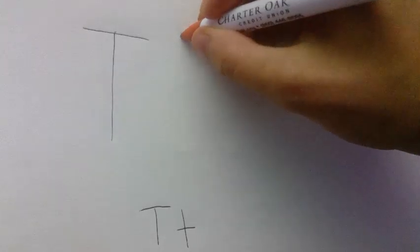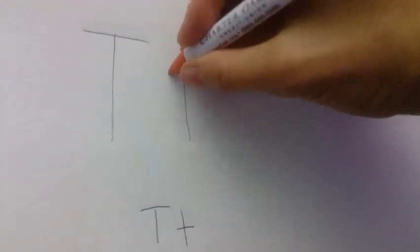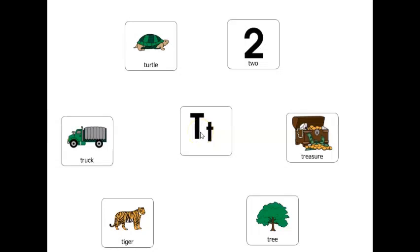To make your lowercase T, you start at the top of your page, draw a long line down. Come to the middle and draw a short line across. And that's your lowercase T. Letter T makes the sound T.